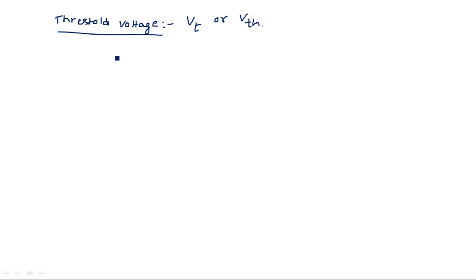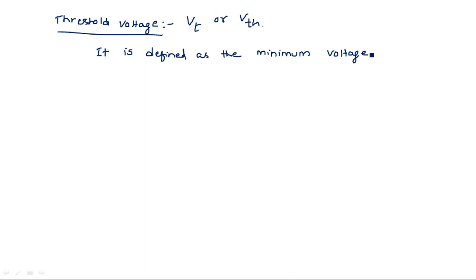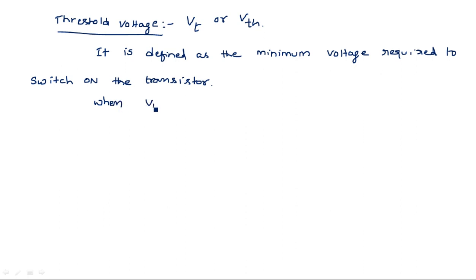Threshold voltage is defined as the minimum voltage required to switch on the transistor. When input voltage VIN is greater than VT, the transistor is said to be in on state. When VIN is less than VT, the transistor is in off state. This is the meaning of threshold voltage.